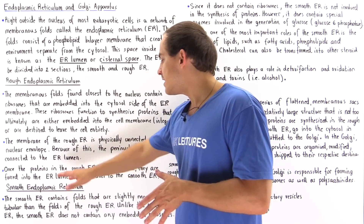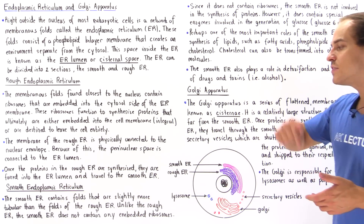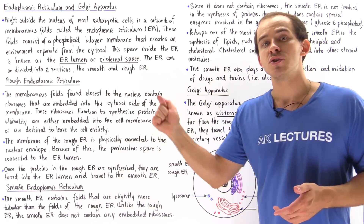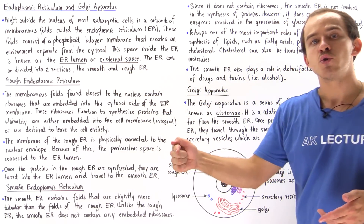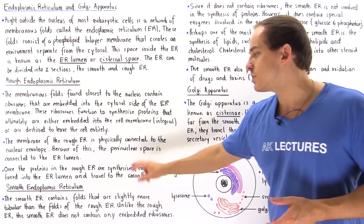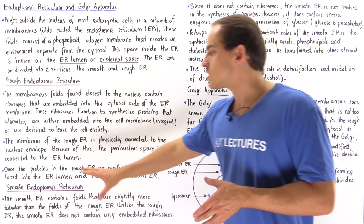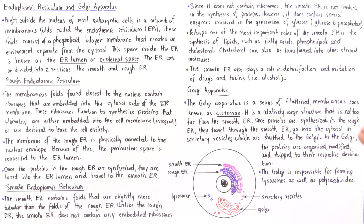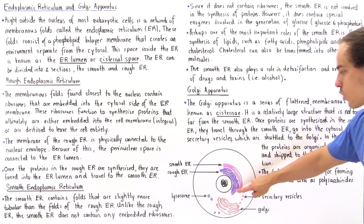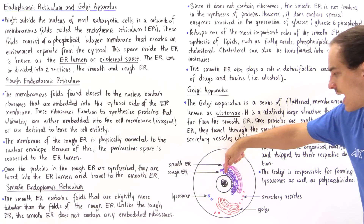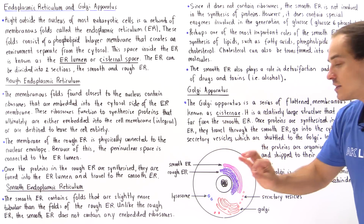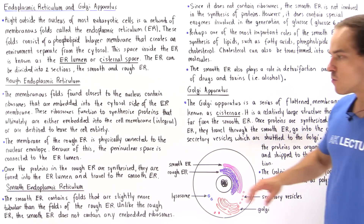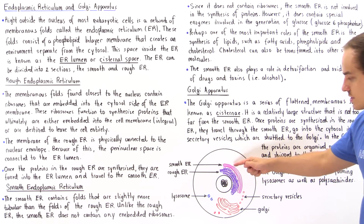Once proteins are synthesized on the cytosol side of the rough ER, they are placed into the ER lumen and travel through the rough ER lumen and eventually into the smooth ER lumen. In a diagram of the eukaryotic cell, we have the nucleus, the rough endoplasmic reticulum with its folds, slightly smoother more tubular folds on the smooth ER, and the Golgi apparatus.